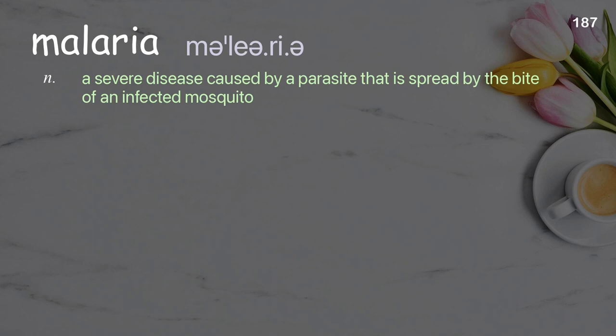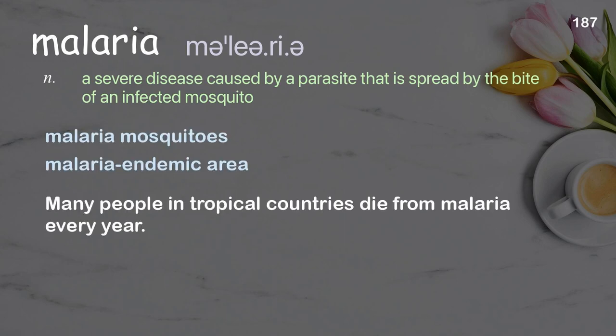Malaria: a severe disease caused by a parasite that is spread by the bite of an infected mosquito. Examples: malaria mosquitoes, malaria endemic area. Many people in tropical countries die from malaria every year.